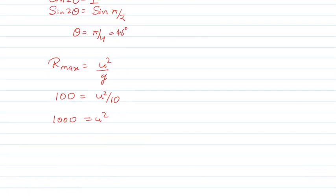So now the last step is to find height. Height will be u squared sin squared theta by 2g. So h will be u squared, 1000, times sin 45 degrees. Sin 45 degrees is 1 by root 2 squared, by 2 into 10.